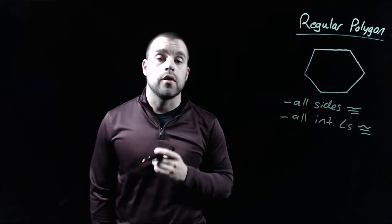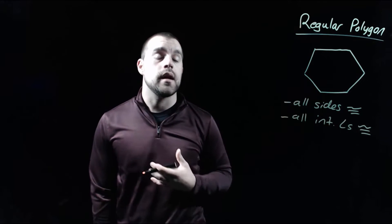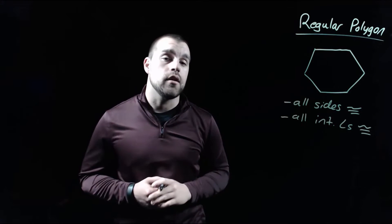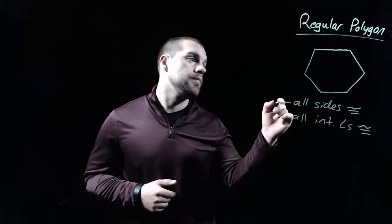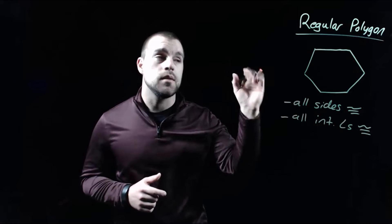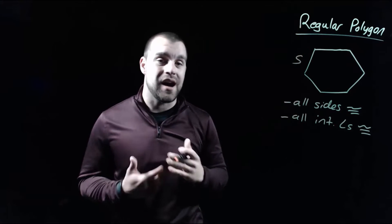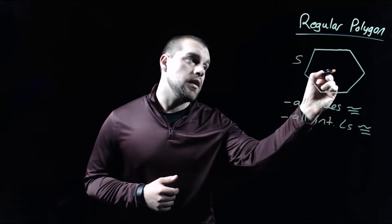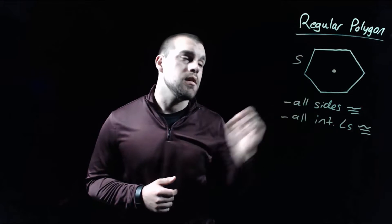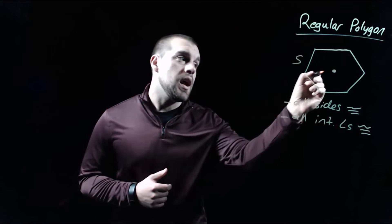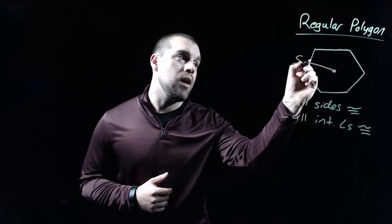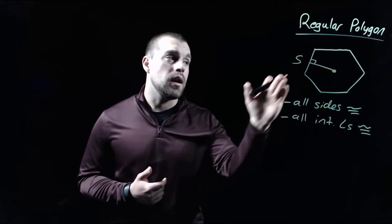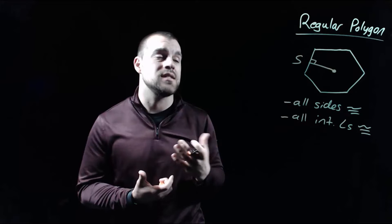Now as we're talking about these regular polygons, there are a couple of lengths that we're going to need in order to find their area. One of the lengths is just going to be the side length around the outside of our figure, but then our other length is going to start in the middle of our figure and go perpendicular out to the edge of our shape, perpendicular to one of the sides of our shape.